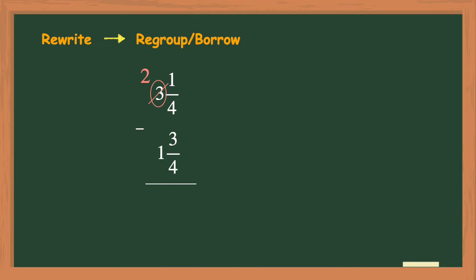They take the 1 that they just borrowed and write it next to the 1 in the numerator. Now it looks like our numerator has changed to an 11 and this is not the correct thing to do.